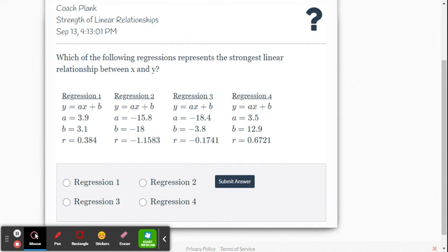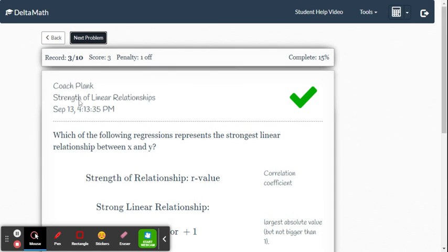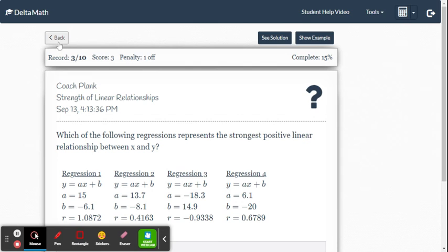So, 0.17 is pretty close to 0. 0.38 is pretty close to 0. The furthest away from 0, closest to 1, is 0.67. So, we're going to say 4. All right, let's do one more.